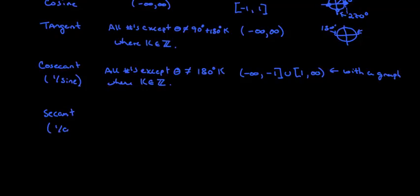Secant is 1 over cosine. Now, I'm not using, I'm not putting an argument there, argument, which is the variable or theta, okay. So I'm just trying to write it as an idea. So this is not mathematically correct. So this is going to be all numbers for the domain. We can plug in any number we want, except we can't plug in angles where cosine is 0. And cosine is 0 at 90 degrees,